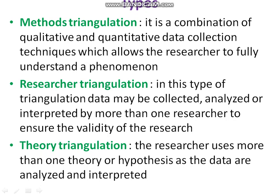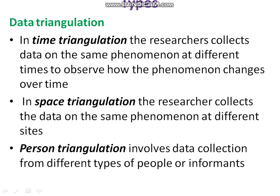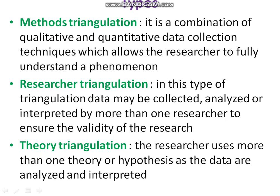So these are the different types of triangulation: data triangulation — which includes time, space, and person triangulation — methods triangulation, researcher triangulation, and theory triangulation. These cover the various research designs and approaches. Please review back again and clarify if there are any doubts. Wishing you a good evening, thank you.